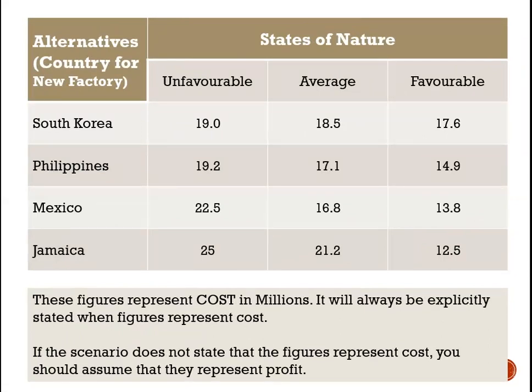We are looking here at the payoff table related to choosing a country for our new factory. The alternatives before us: South Korea, Philippines, Mexico, and Jamaica. And we face three states of nature, which are unfavorable, average, and favorable. The figures in this table represent costs in millions for setting up the factory.